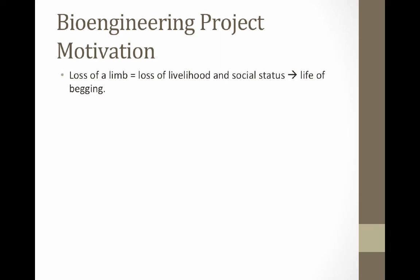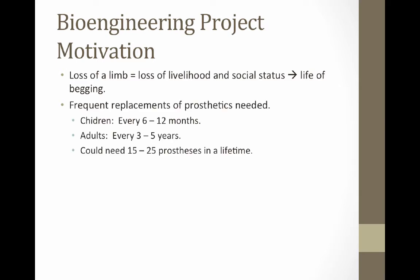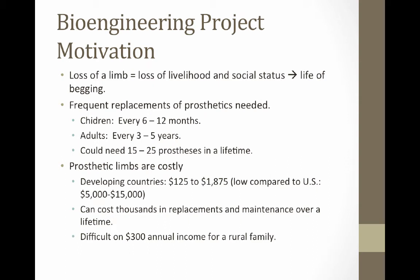When somebody loses a limb in a developing country, it generally means that they have lost their way to make a living — their livelihood and social status. It usually means that person is left to beg for their survival. For children who are growing, they need a new prosthetic limb every six to twelve months. For adults, because of wear and tear, they will need a replacement every three to five years.